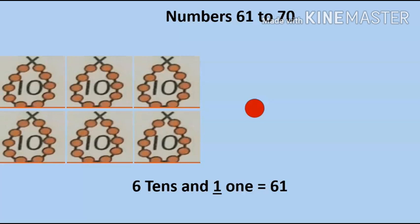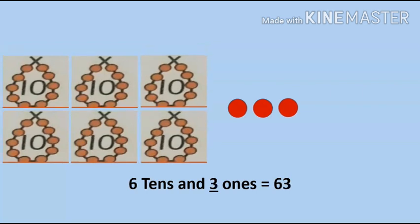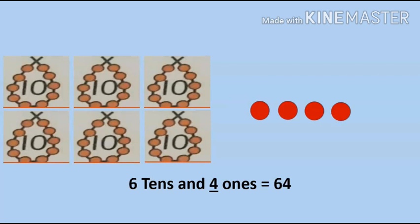Six tens and one one is equal to 61. Six tens and two ones is equal to 62. Six tens and three ones is equal to 63. Six tens and four ones is equal to 64.